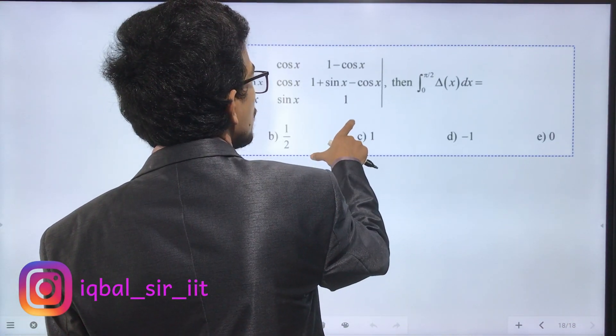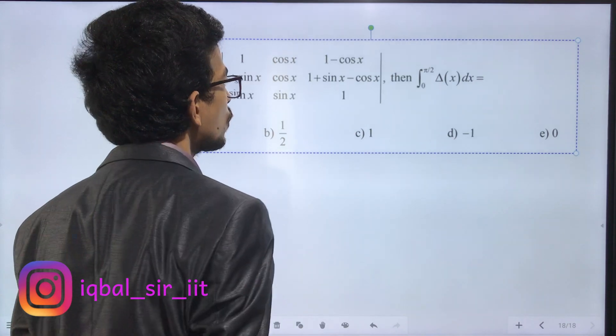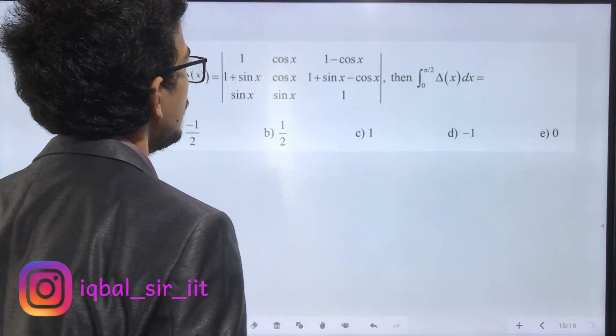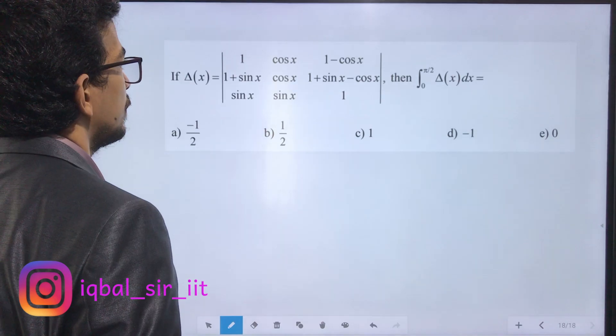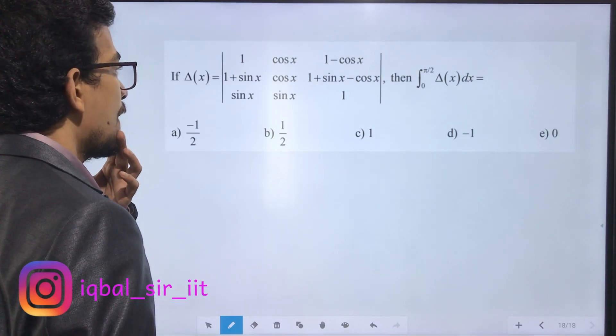Delta of x is equal to something, then take the integral from 0 to π/2 of delta x dx.